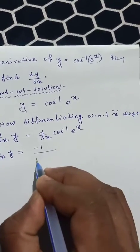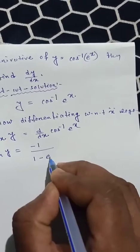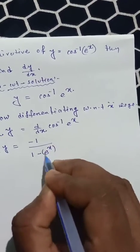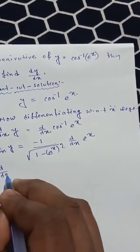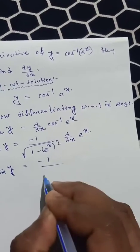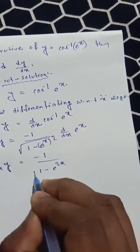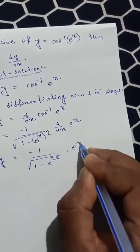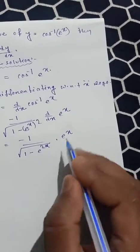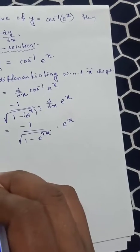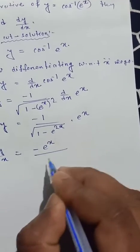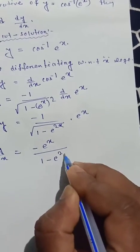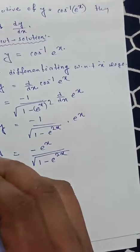The derivative of cos inverse is minus 1 by root of 1 minus e to the power x whole square, multiplied by d by dx of e to the power x. So dy by dx equals minus e to the power x divided by root of 1 minus e to the power 2x.